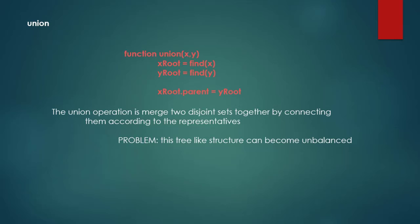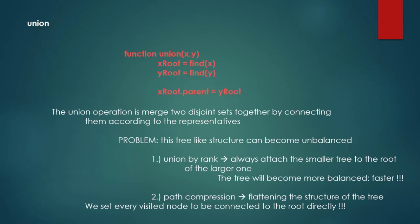Several problems arise. For example, this tree-like structure can become unbalanced. Binary search trees are not good data structures because they can get unbalanced, making operations very slow. This is why AVL trees and red-black trees exist. The same applies here. We have several options, for example union by rank — we always attach the smaller tree to the root of the larger tree.